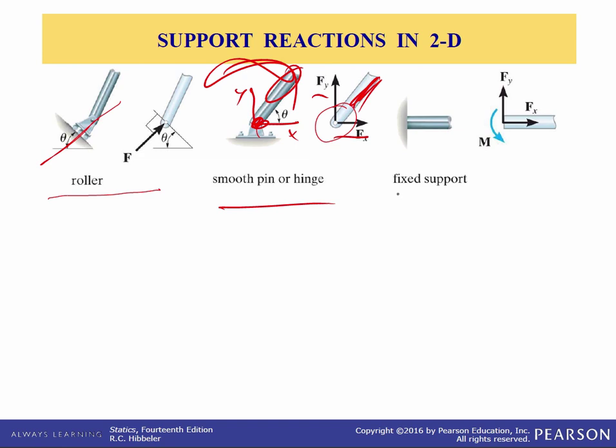Finally we have a fixed support. This is like a pipe embedded in some concrete and it of course prevents translation in these two directions so we have those two reactive forces plus it can support a moment. You can imagine putting a load here or standing on there and it would cause a couple moment about this point right there.